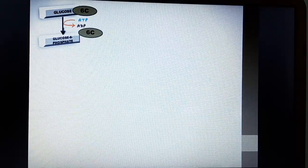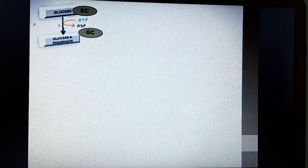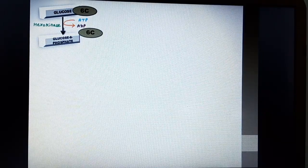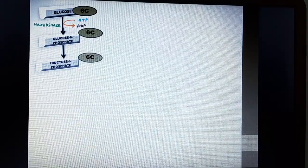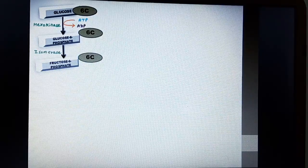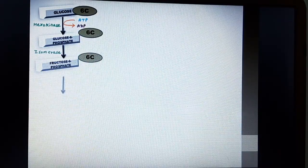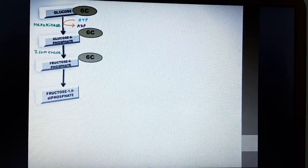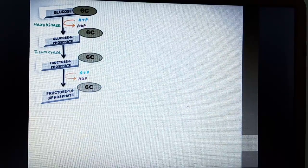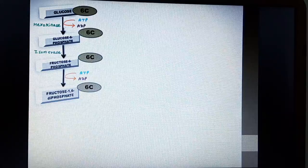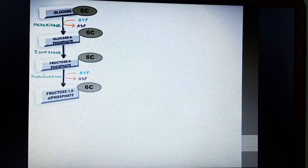Glucose is a 6 carbon compound. It undergoes phosphorylation and forms glucose 6 phosphate which is also 6 carbon compound. It means ATP getting converted into ADP in the presence of enzyme hexokinase. Glucose 6 phosphate undergoes isomerization and it forms fructose 6 phosphate which is also 6 carbon. Again here ATP is used up to form ADP and phosphate goes to fructose 6 phosphate in the presence of enzyme phosphofructokinase.